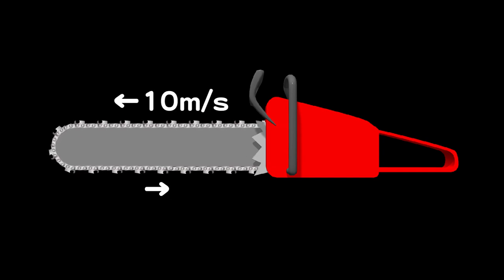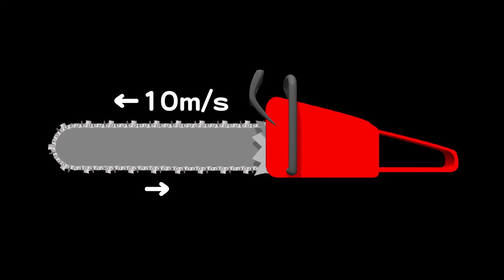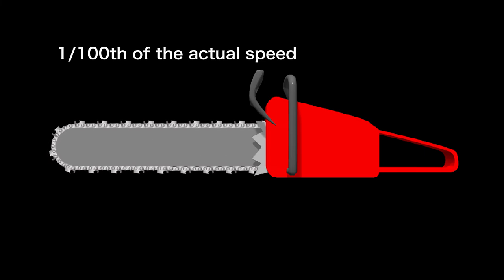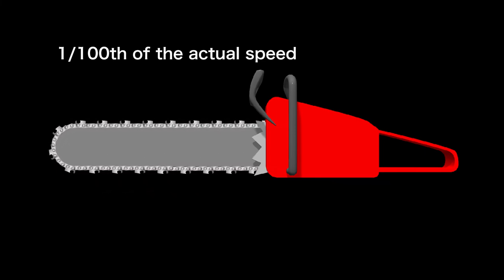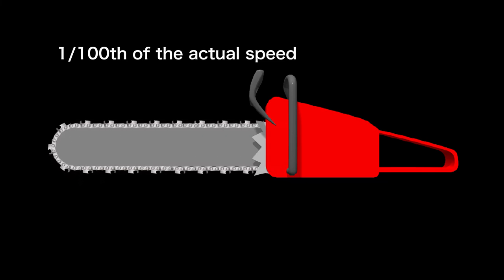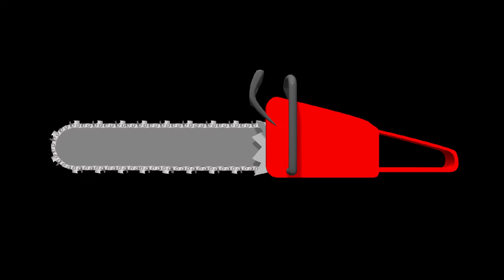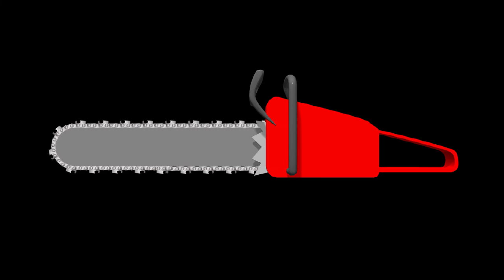The chainsaw blade is moving at more than 10 meters per second when cutting a tree. The speed of the chainsaw blade you see now is 1/100th of the actual speed. If the tip of the chainsaw comes in contact with a log and one of the blades of the chain locks onto the log —